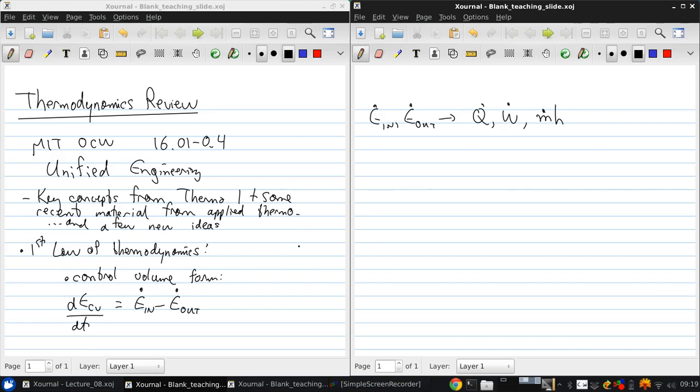And this is basically an equation that states that energy is conserved. For a steady process, which is what we're most going to often be concerned with, where the focus is going to be on propulsion, dE_CV/dt equals zero, so nothing inside the control volume is changing with time. So then, we simply have E dot in equals E dot out.